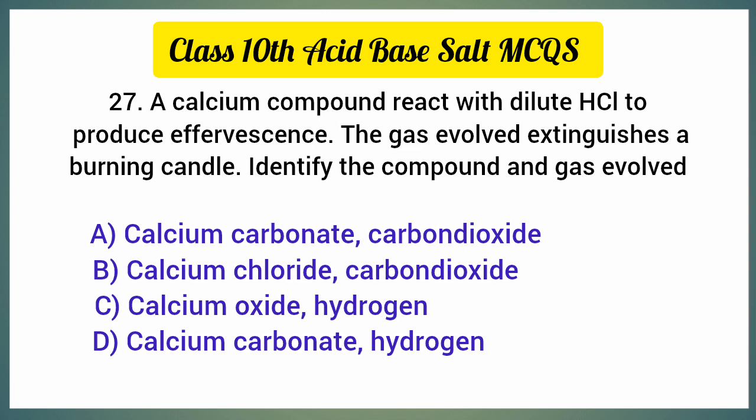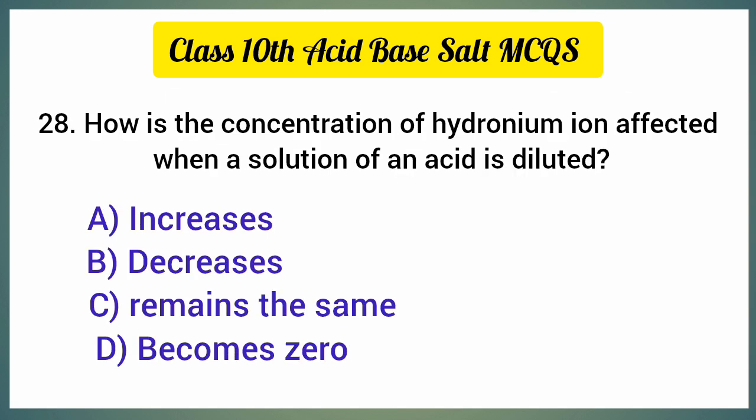A calcium compound reacts with dilute hydrochloric acid to produce effervescence; the gas evolved extinguishes a burning candle — identify the compound and gas evolved. The correct option is option A, calcium carbonate and carbon dioxide. How is the concentration of hydronium ion affected when a solution of an acid is diluted? The correct option is option A, decreases.